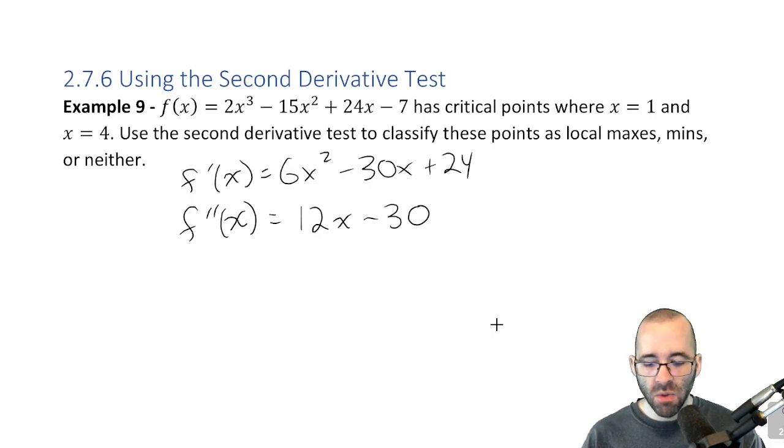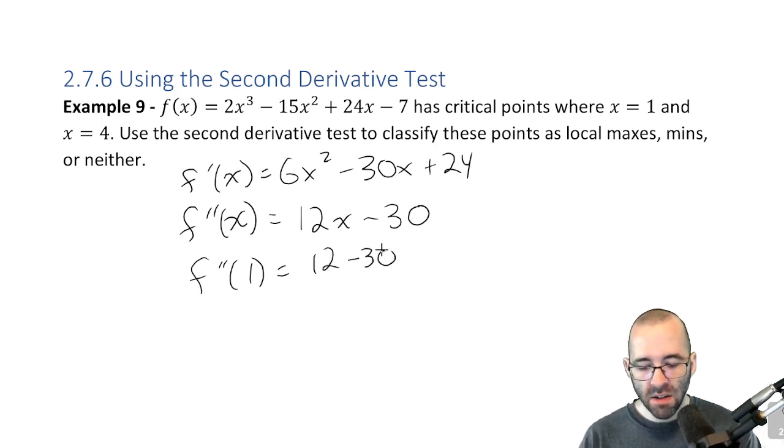Now let's just find out whether we're concave up or concave down at these points. So the second derivative at the first critical point, we just plug in 1. We get 12 minus 30. That's negative 18.